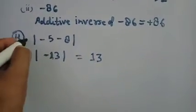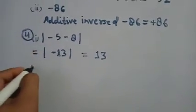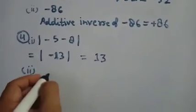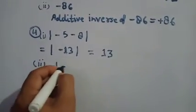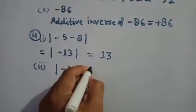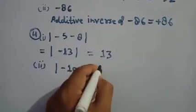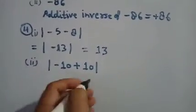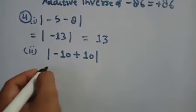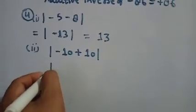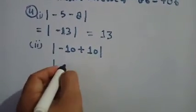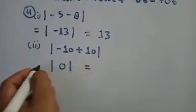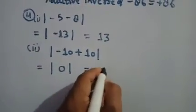Part number 2: |minus 10 + plus 10|. These values are also inside the same absolute value symbol, so first solve plus 10 plus minus 10, which equals 0. The absolute value of 0 is 0.